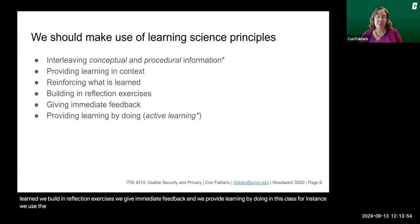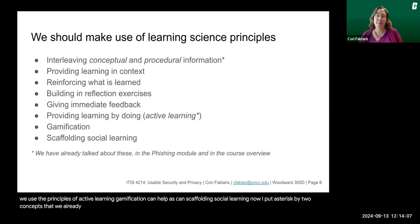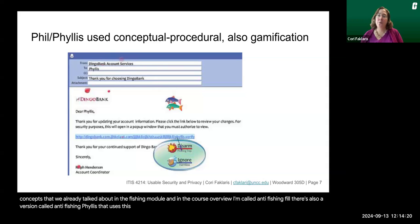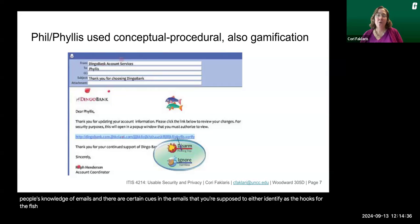In this class, we use the principles of active learning. Gamification can help, as can scaffolding social learning. There's a game called Anti-Phishing Phil — and also a version called Anti-Phishing Phyllis — that uses conceptual-procedural interleaving along with gamification. It tests people's knowledge of emails, identifying cues that are hooks for phishing or are legitimate.